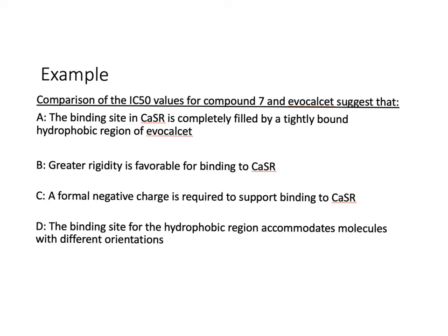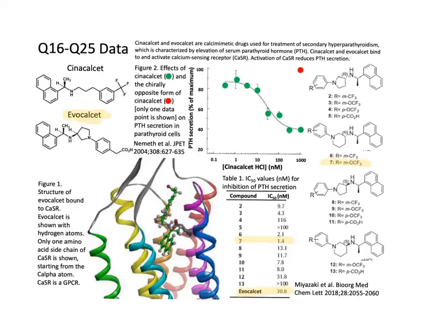So the question asks about using IC50 data to compare evocalcet to compound 7. I highlighted in yellow evocalcet and compound 7 and their IC50 values. When you compare evocalcet and compound 7, you can see what's different is what's on the aromatic portion, which I'm highlighting in red — there's a carboxyl acid on evocalcet and then an O-CF3 on compound 7. Looking at the IC50 values, compound 7 has a lower IC50 value by about 30 times and is therefore a more potent inhibitor.